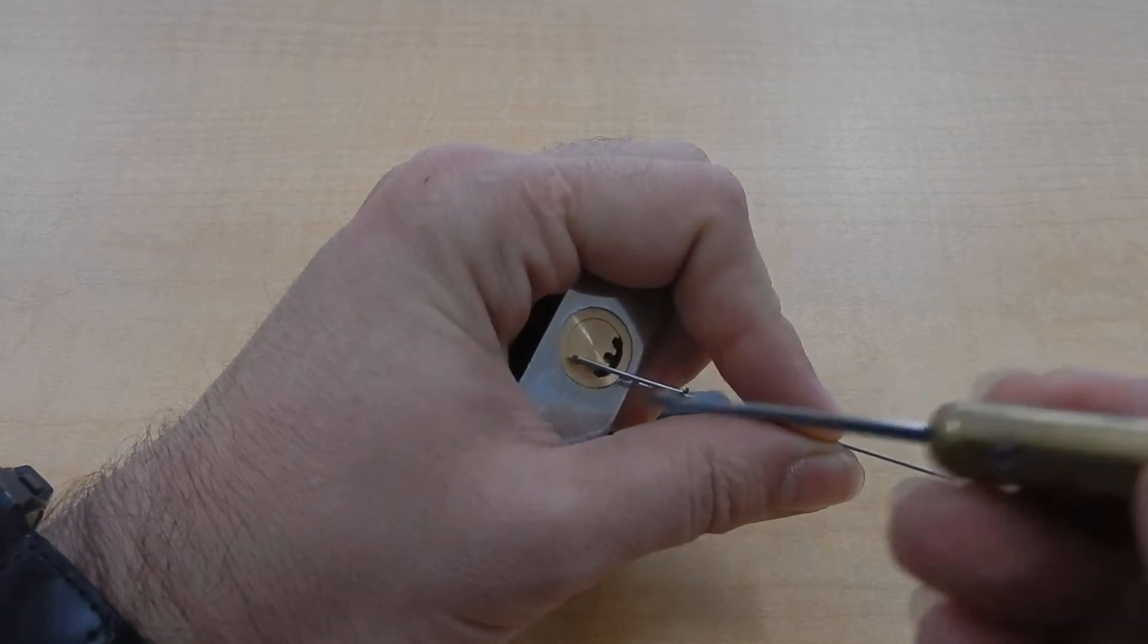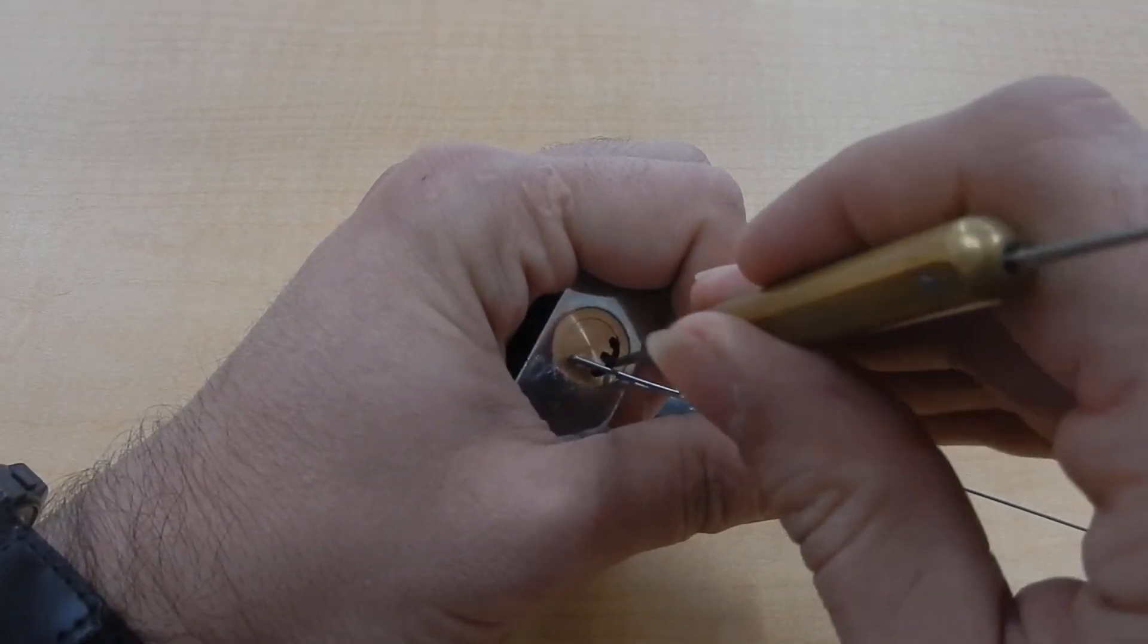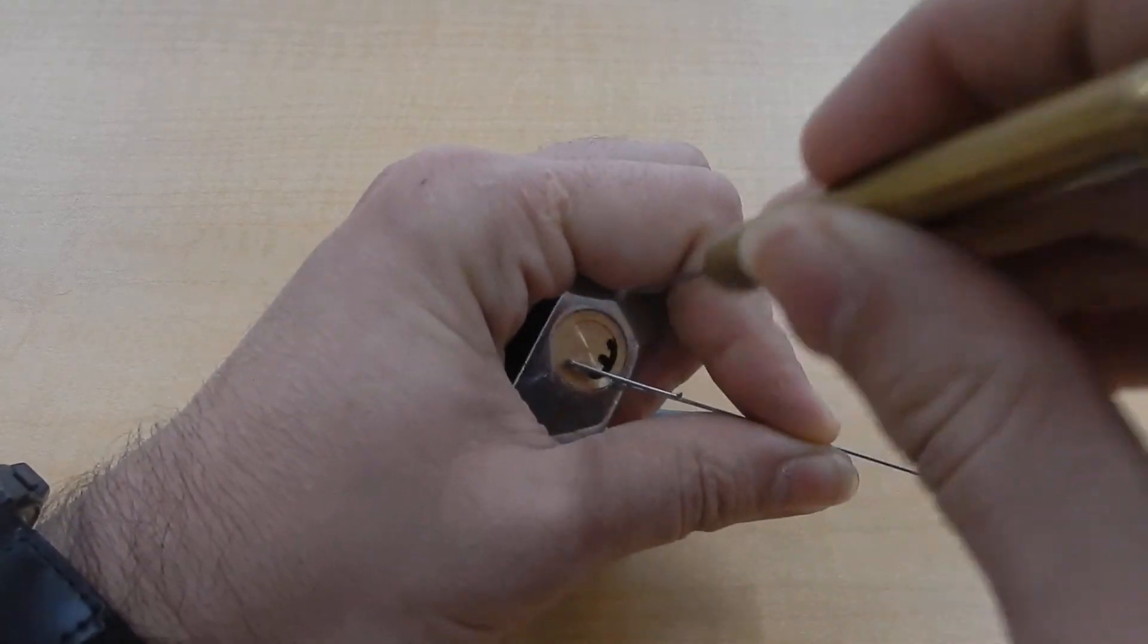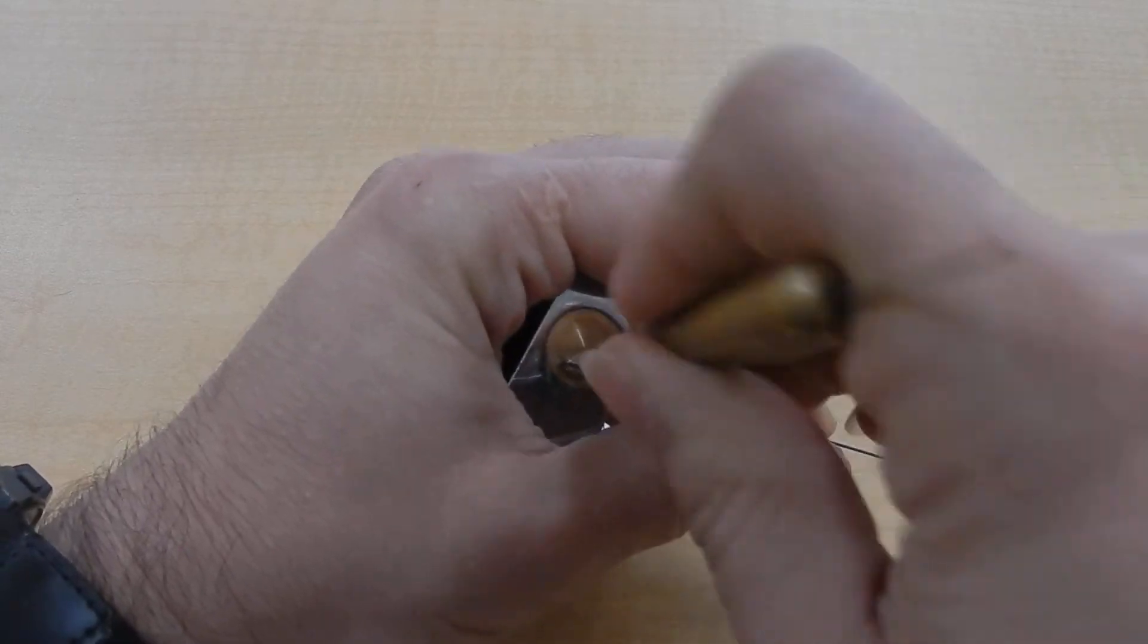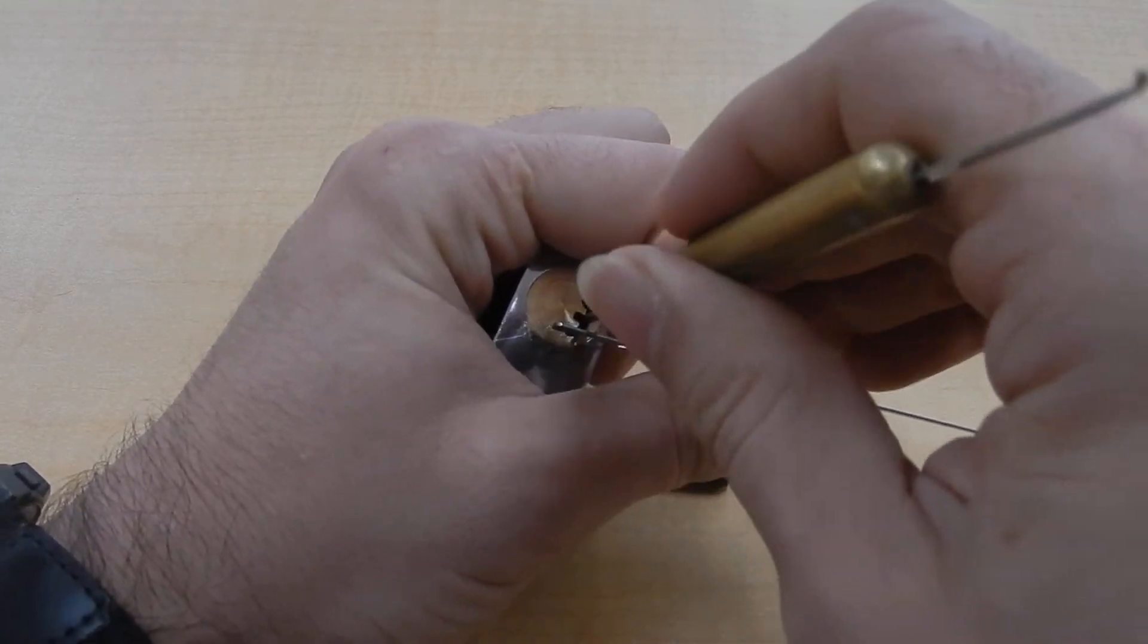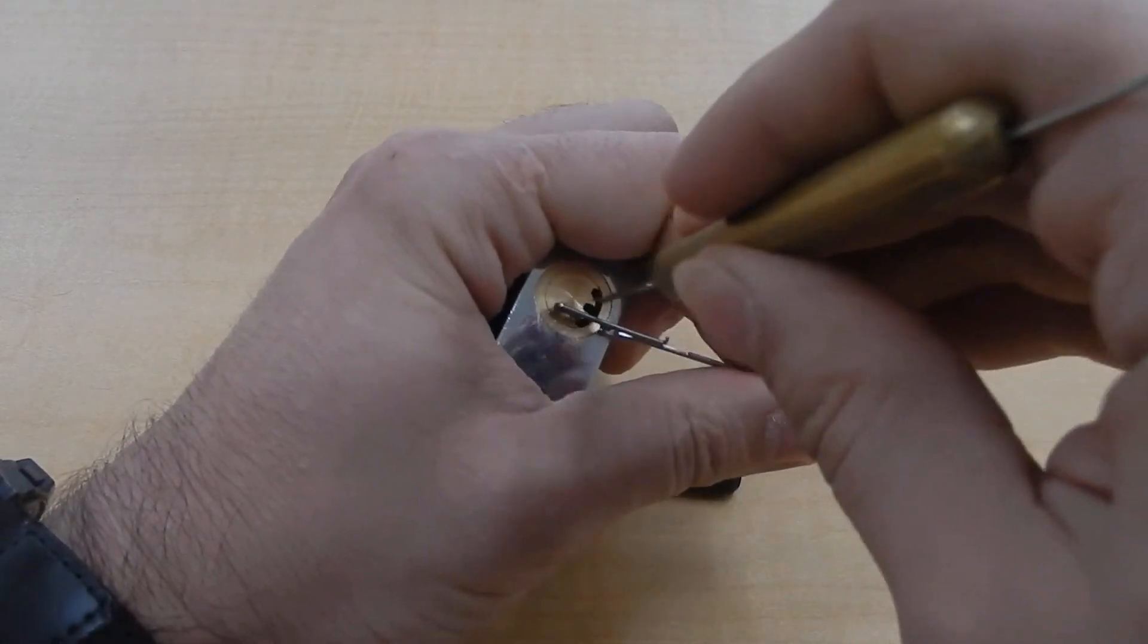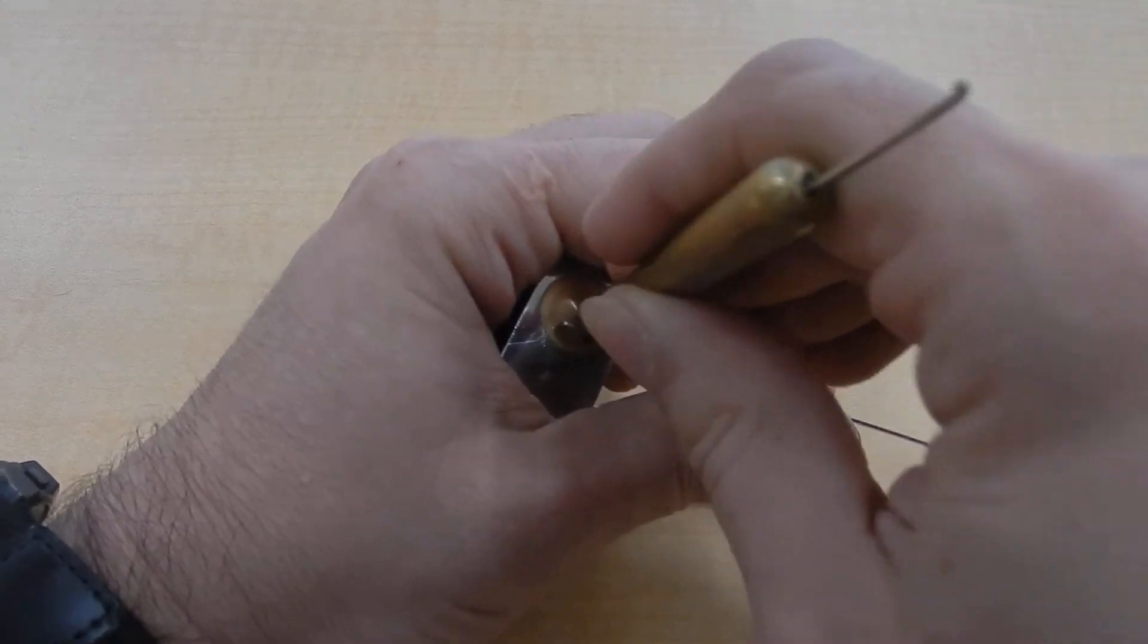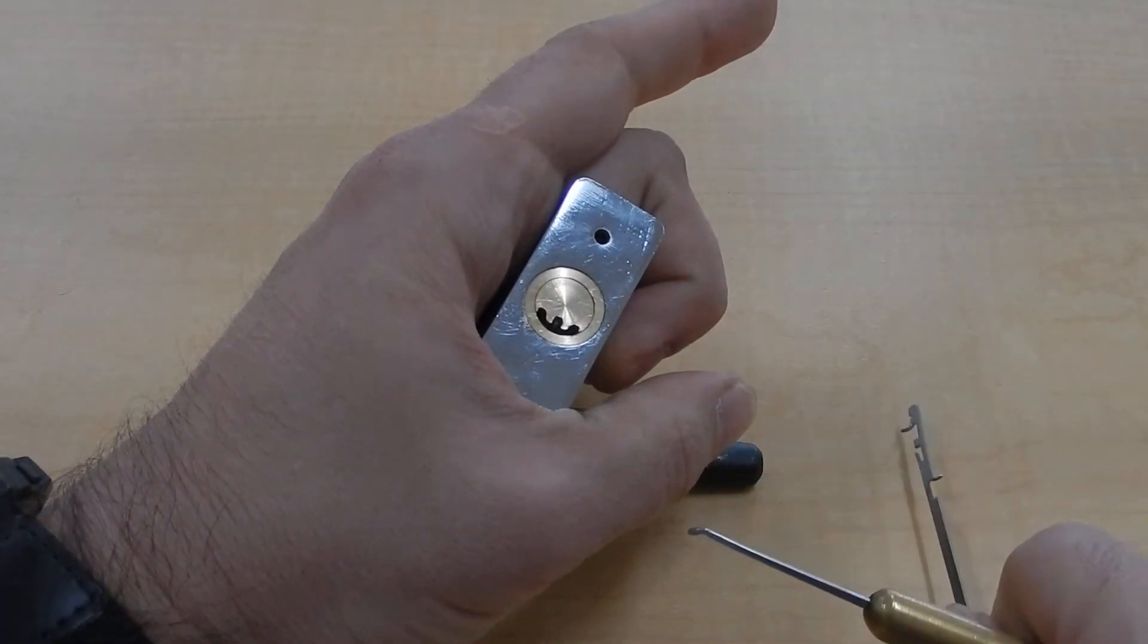And then using my diamond, it's actually short enough that I can just use it as a rake. Tension her back in there. Just rake it back and forth in there. And it opens.